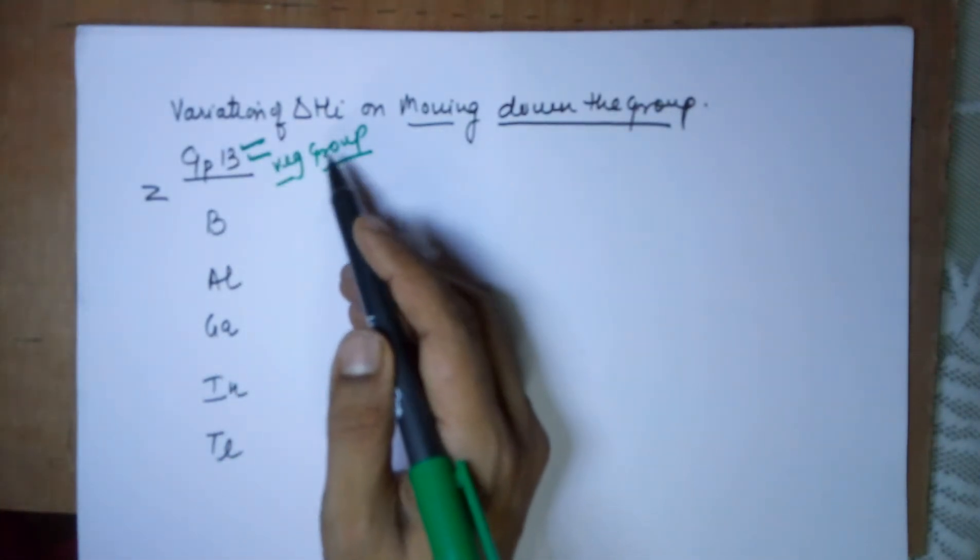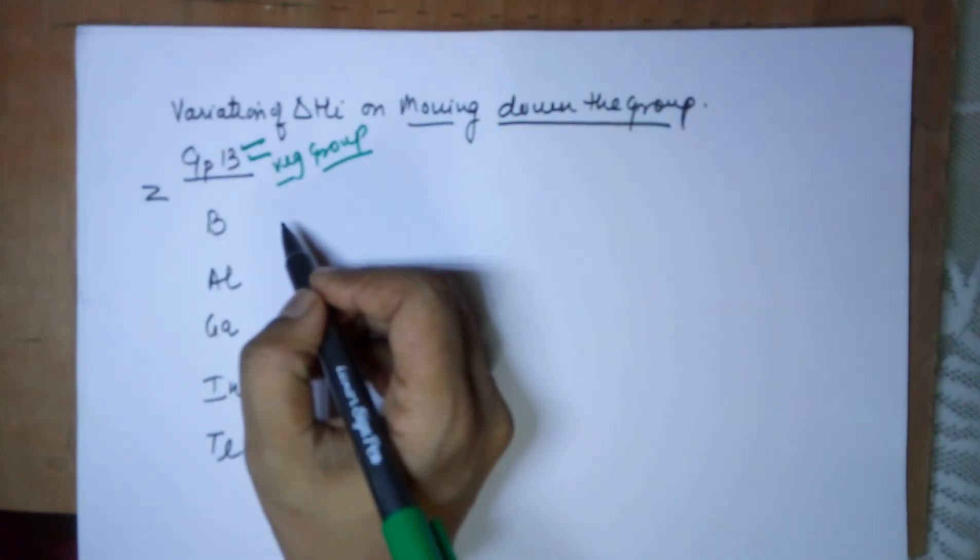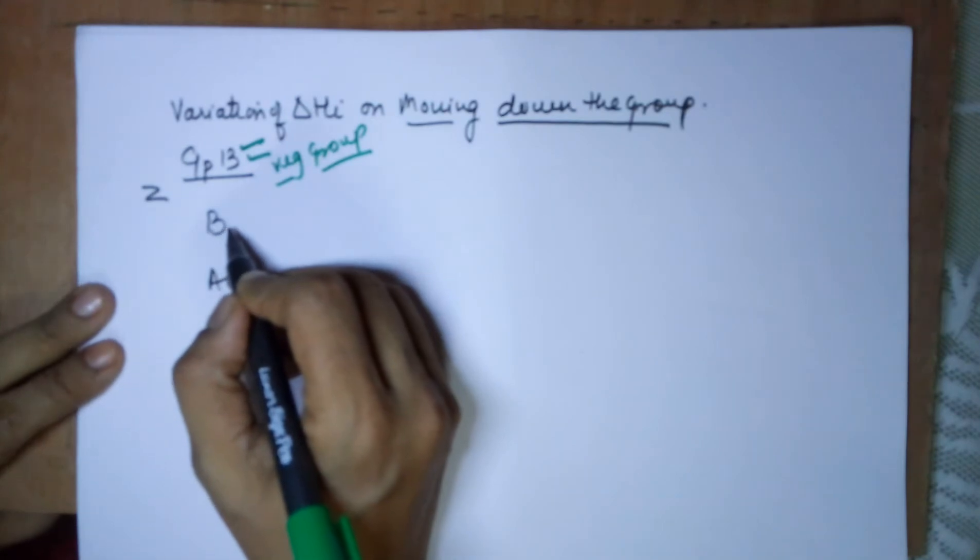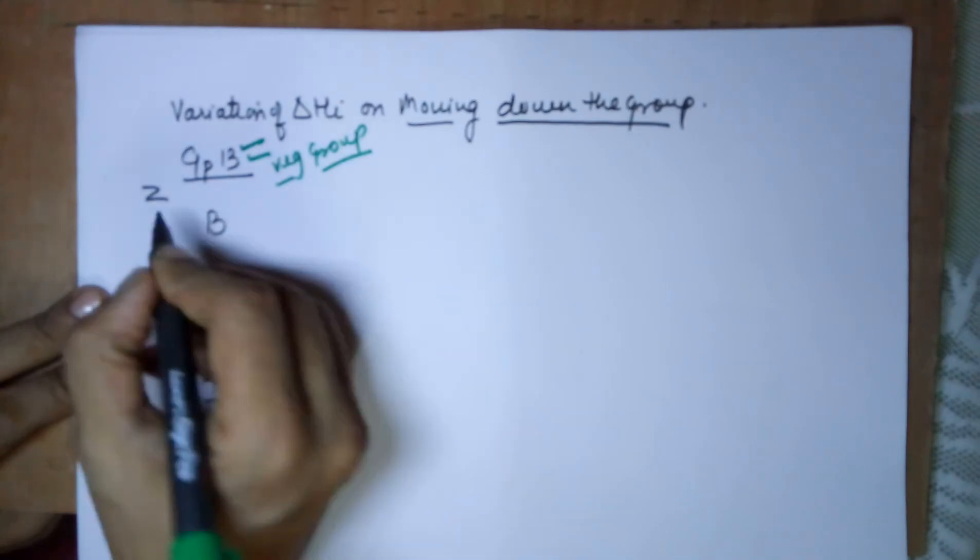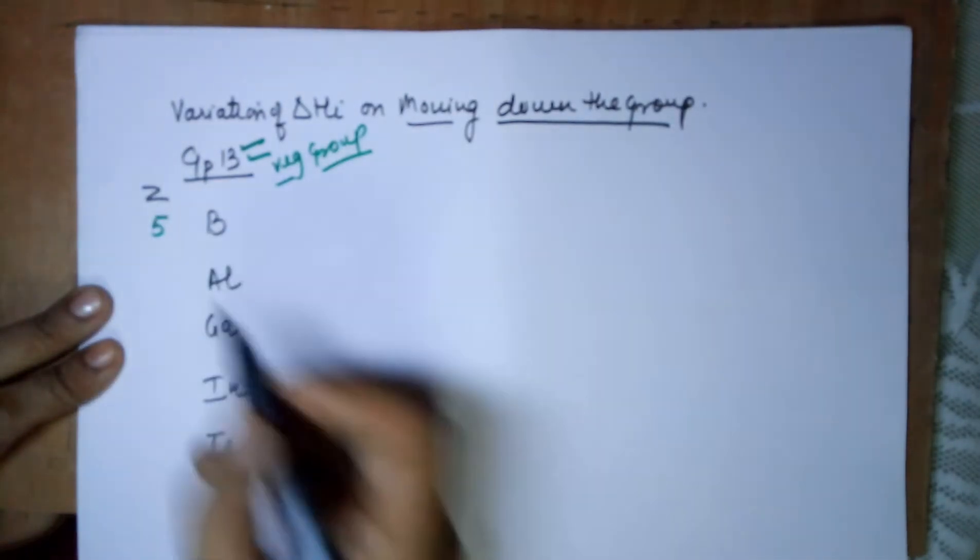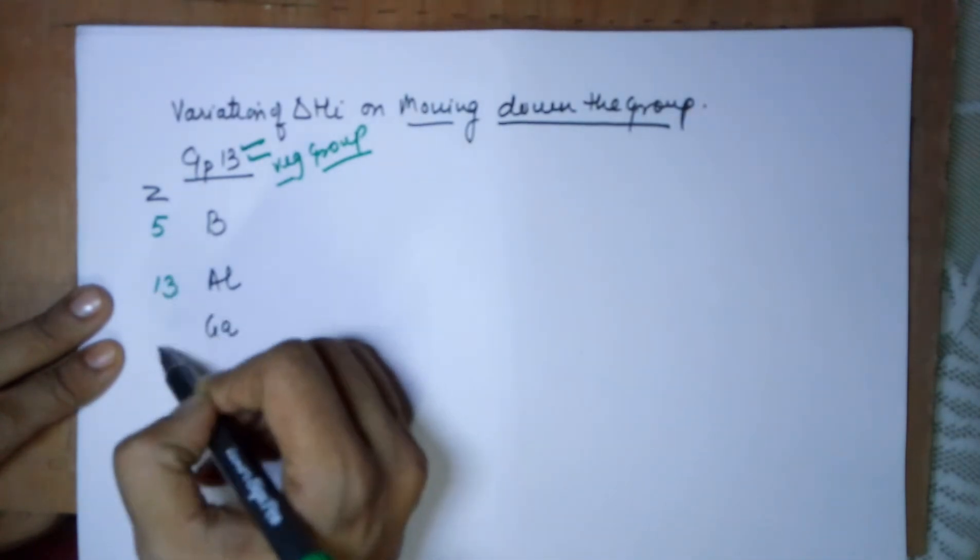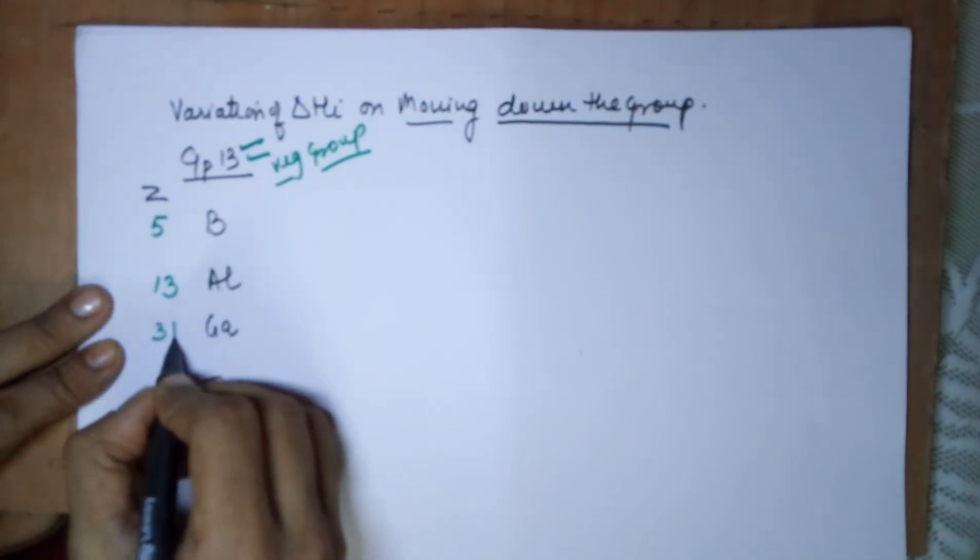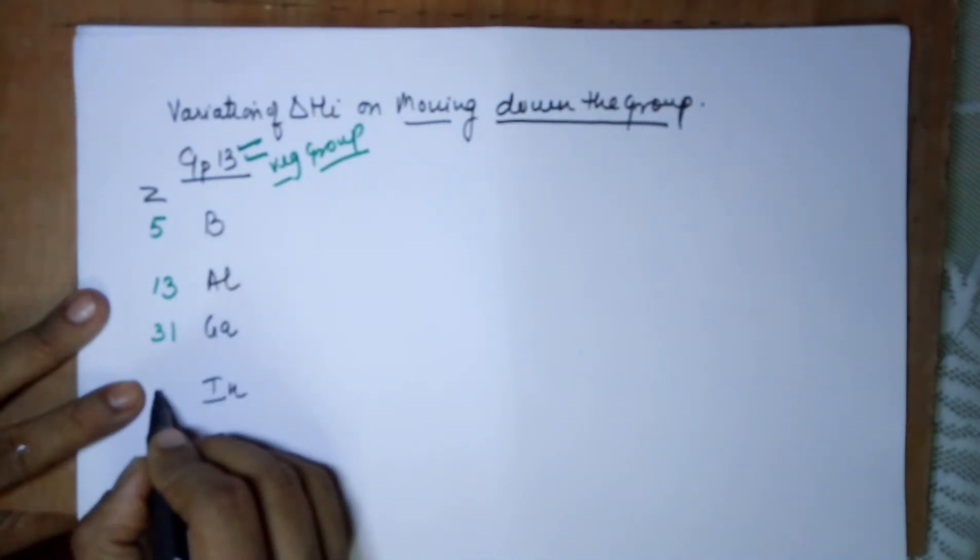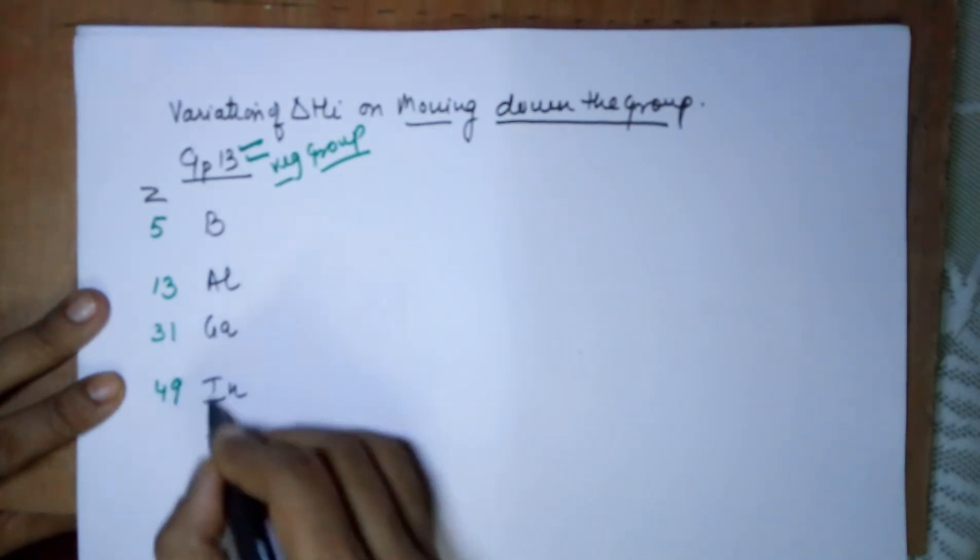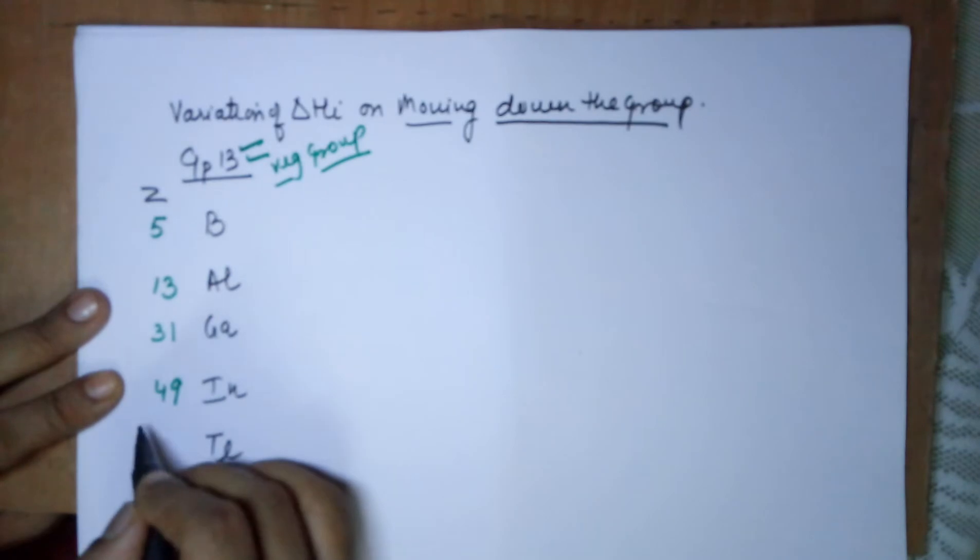Now moving to the atomic number, let me give you help in learning that too. For the first member, boron, the atomic number is 5. Add 8 to it, you end up at 13. Add 18 to it, you end up at atomic number 31. Add another 18 to it, you end up at 49. Add another 32 to it, you get 81.